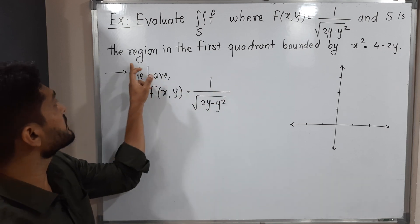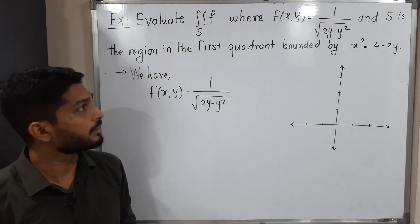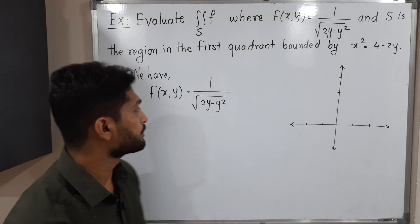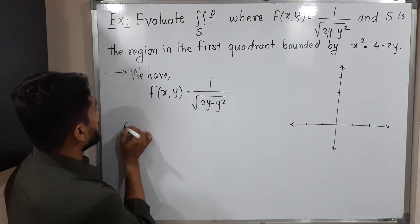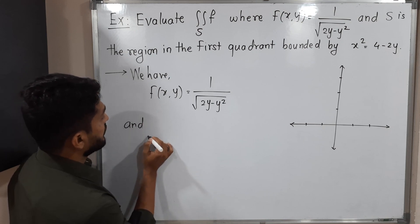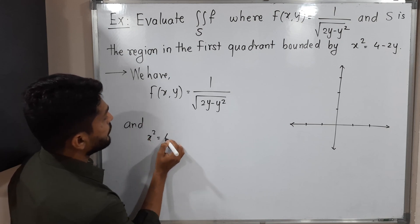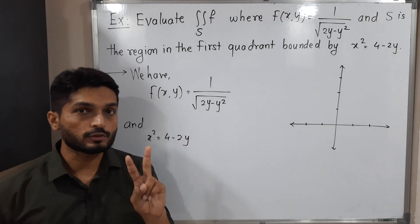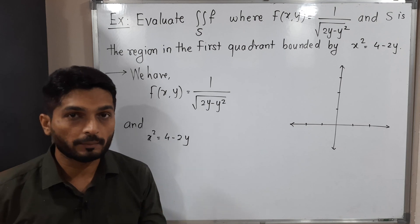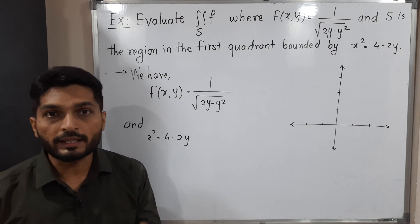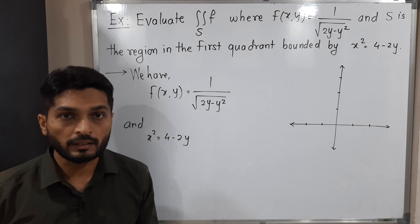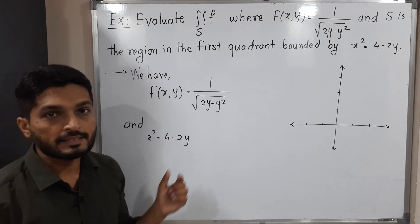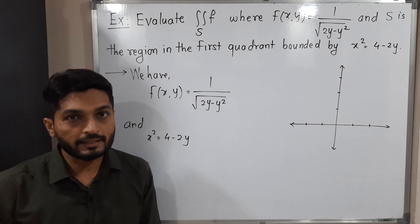S is a region in the first quadrant which is bounded by this curve. Let us talk about that curve. We have a curve x² = 4 − 2y. As you can see, the power of x is 2 and the power of y is 1. If the power of one variable is 2 and the power of the second variable is 1, it represents a parabola. So here also it represents a parabola.